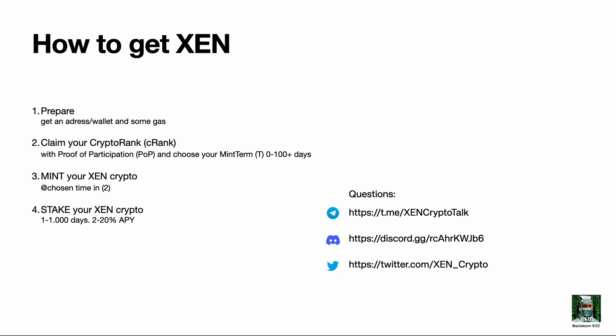Number two: claim your crypto rank, your C-rank. This is something that sort of happens automatically by just connecting to the network and pressing a button — you get your crypto rank, and at the same time you'll be prompted to choose your mint term. This can be chosen anywhere from zero to 100 days initially, and after a while it will go all the way up to around 400 days with adoption.